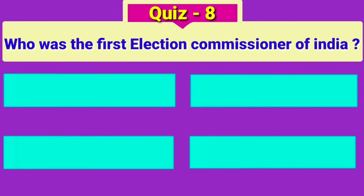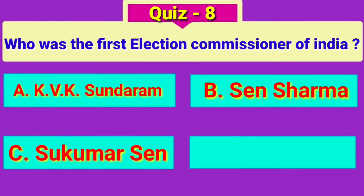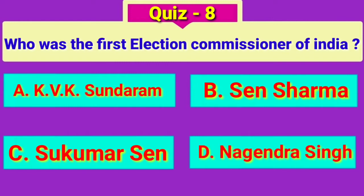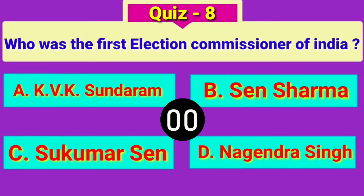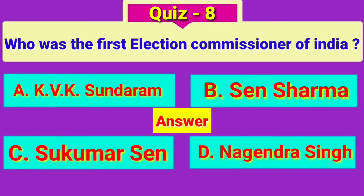Question number 8. Who was the first election commissioner of India? Question number 9. Who was the first chief justice of the Supreme Court? Answer: Sukumar Sen.